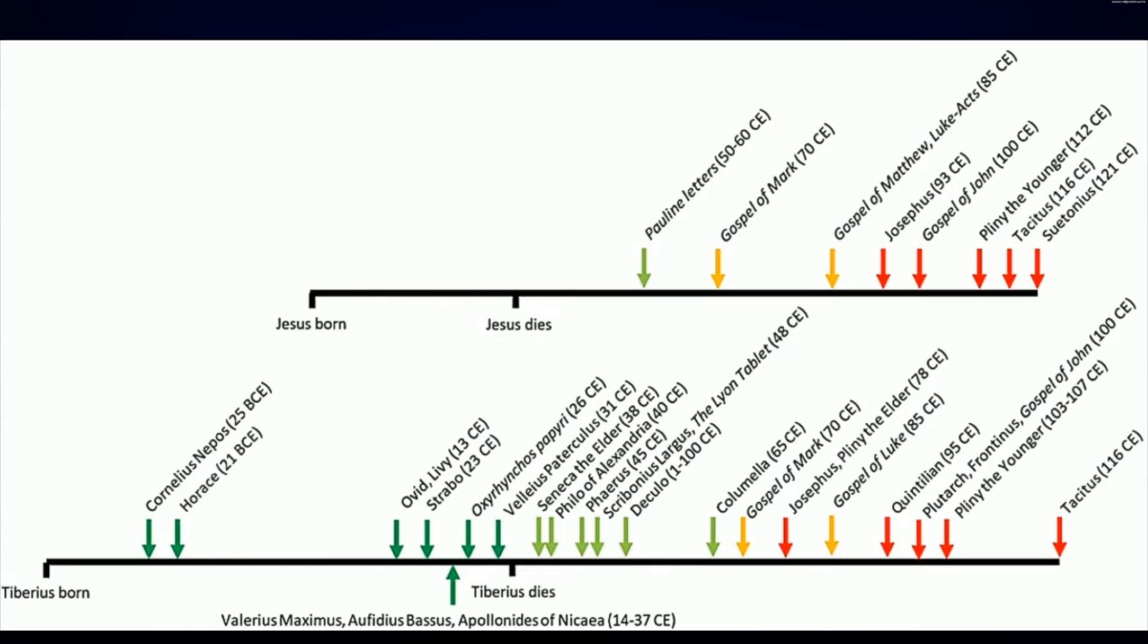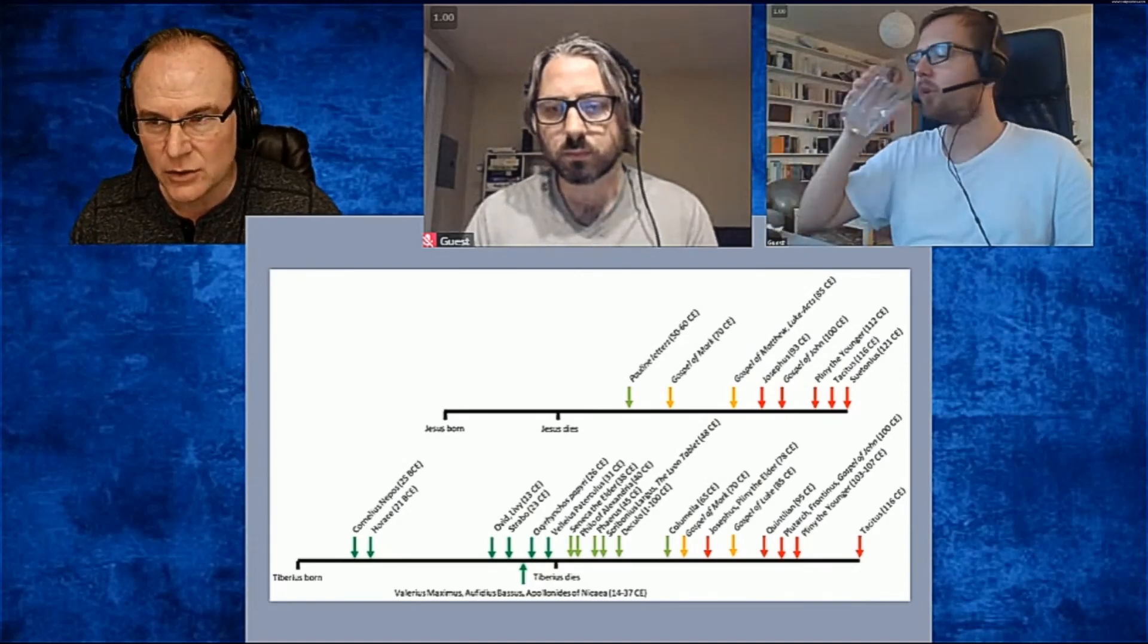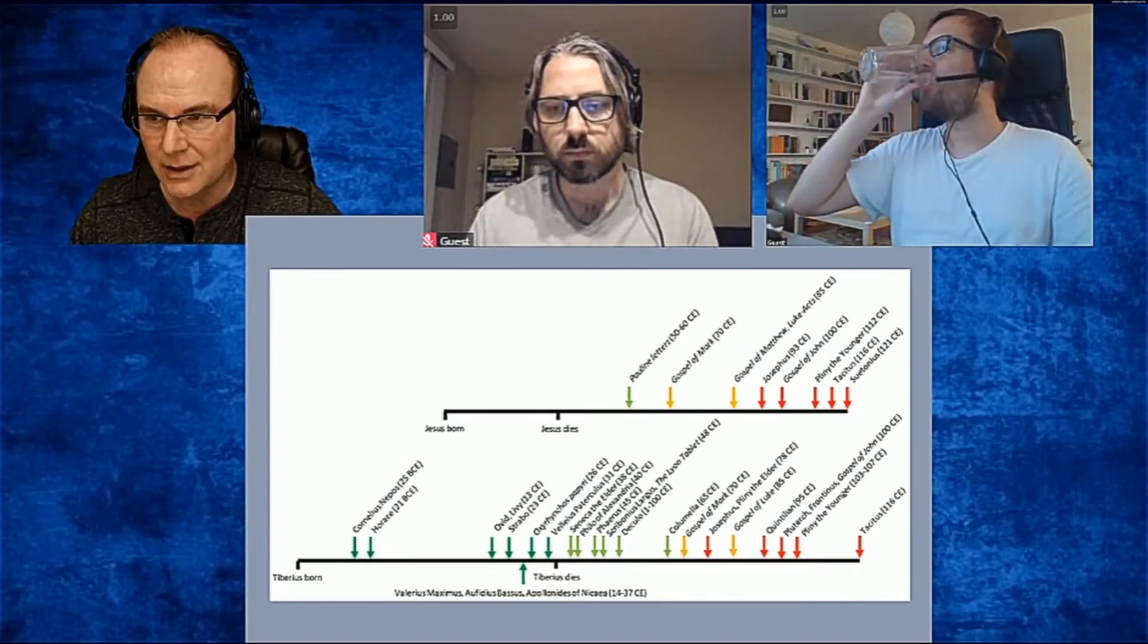Yellow is unknown because they are usually anonymous. And it's important to say that this is incomplete—there's much more sources that we have. Habermas said in the video clip I just played that there's only one contemporary source for Tiberius.